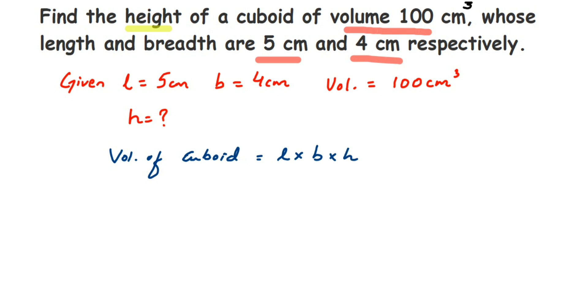We know volume of cuboid, it's given which is 100 centimeter cube. So I'm going to write down here 100. I'm not writing the units, I'm going to mention the units at the end. So this is equal to length, length we have given is 5, so 5 into breadth we have given is 4, so 4 into height. We have to find out the height, so I'm going to put h itself. Now this is equal to...